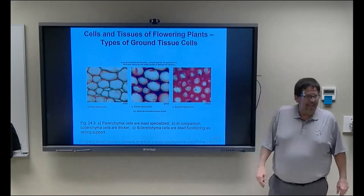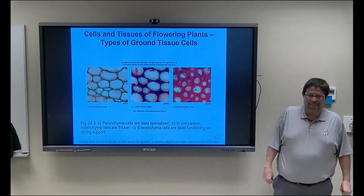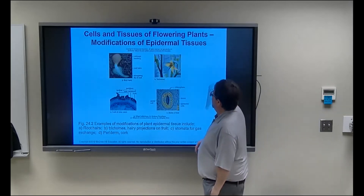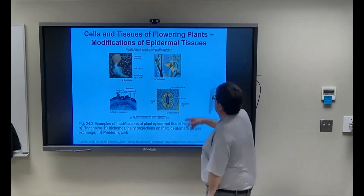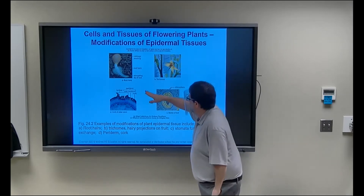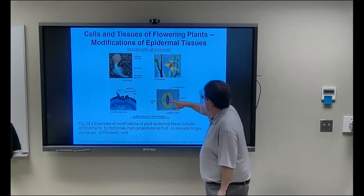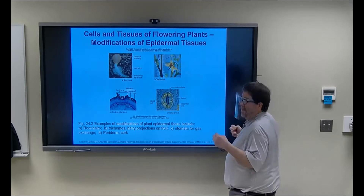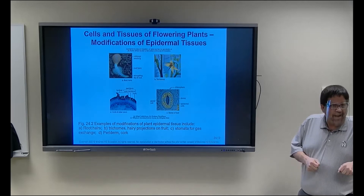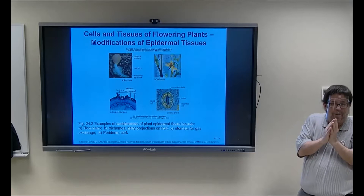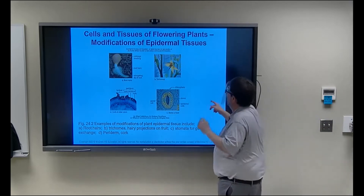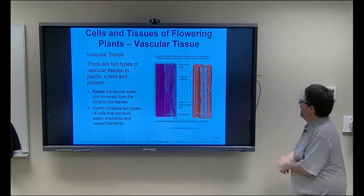Here are some modifications of the epidermal tissue: root hairs, trichomes protecting the stomata. The periderm gives rise to lateral stems and roots, and there's that guard cell surrounding the stomata. The guard cell is like a tire — when you fill it with water it opens up the circle, and when you let the water out it closes. That's your stomatal door.